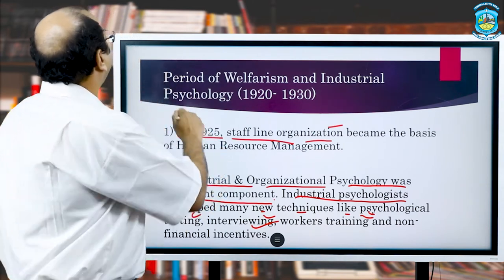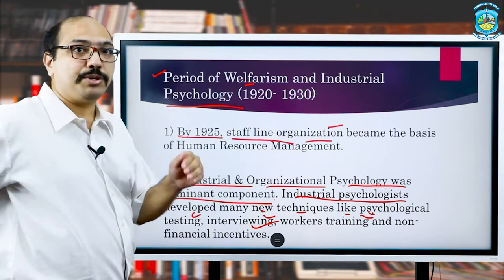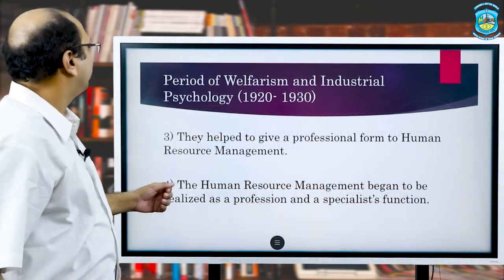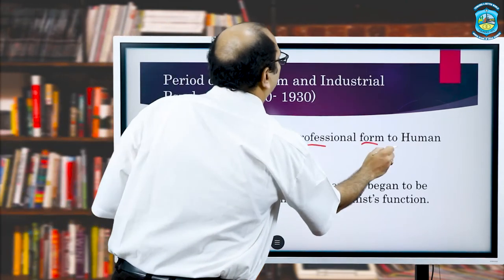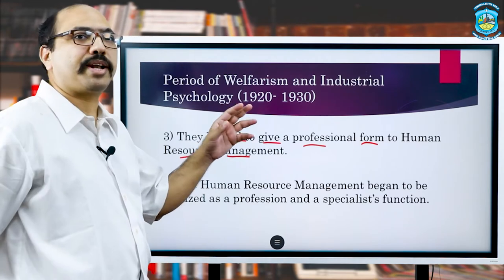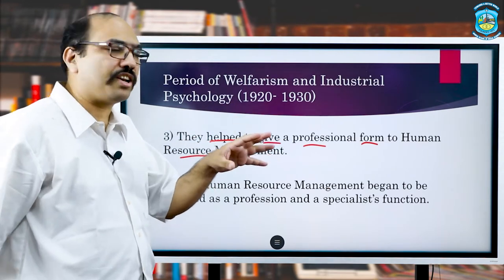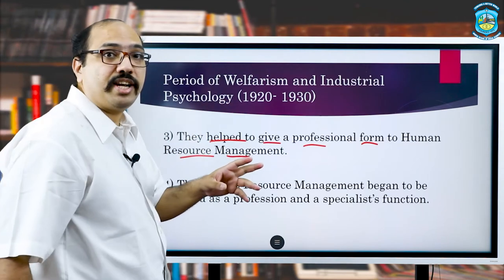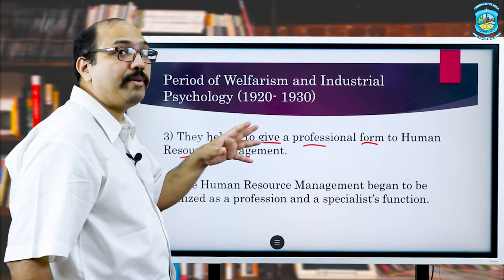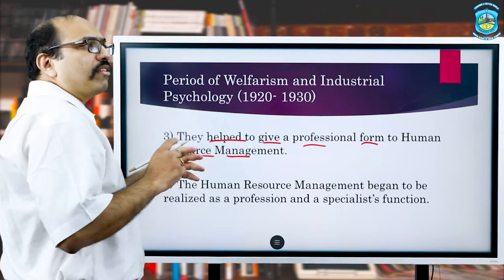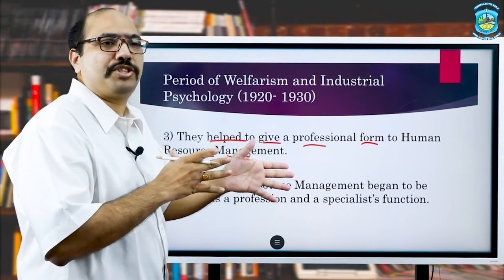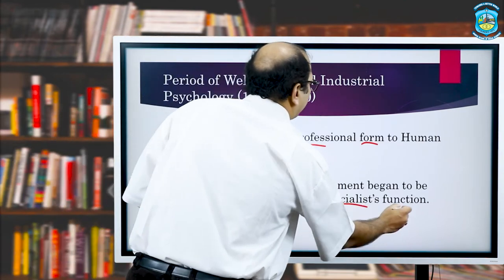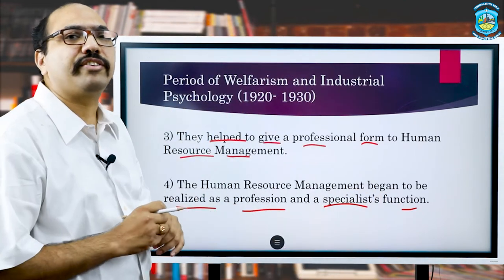Slowly the psychological aspect crept into human resources management, and this period helped give a professional form to HRM. For the very first time the scientific community at large recognized something called psychology of the workplace, naming it organizational psychology. At that time people were not talking about human resources management but used terms like industrial psychology or organizational psychology. HRM began to be realized as a profession and specialist function, but at least some recognition was obtained by this period.